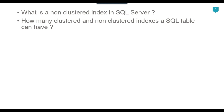How many clustered and non-clustered indexes can we have on a SQL Server table? A SQL Server table can have only one clustered index while it can have up to 999 non-clustered indexes. If a table contains a clustered index, the table is called a clustered table. If a table does not have a clustered index, then the table is called a heap.